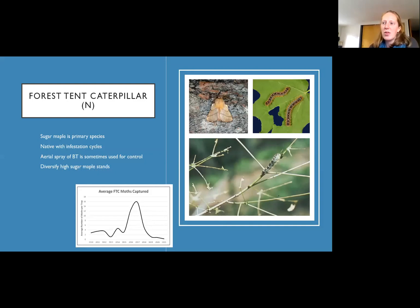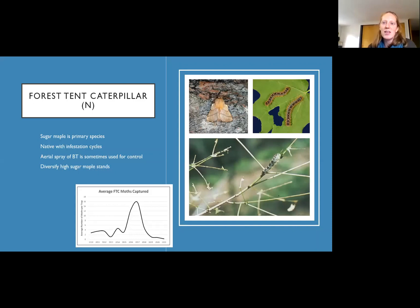We're now just coming off a big boom in forest tent caterpillar — 2016 was the last peak. It moves throughout the state, so we'll see infestation levels high in some areas and low in others every year. If you have a pure sugar maple stand, it's going to be impacted a lot more than if you had 25 percent non-sugar maple species in it — that canopy cover would be unaffected by this pest.